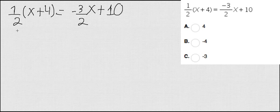How do I do it? You can see here that you have 1/2(x+4) = -3x/2 + 10. I want to go ahead and rewrite this equation so it is easier to solve.